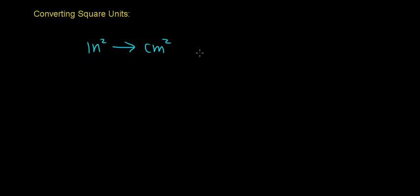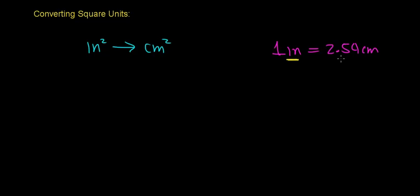Before we can make this conversion, we need to know the linear unit relationship between the inch and the centimeter. In a previous video, we said that one inch was exactly equal to 2.54 centimeters. This was the unit relationship between the inch and the centimeter. Notice that the unit of an inch is much larger than the unit of the centimeter — in fact, one inch is exactly 2.54 times the length of one centimeter.